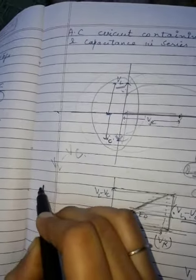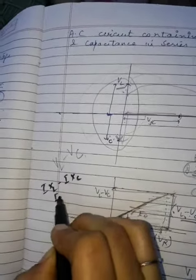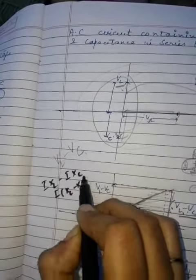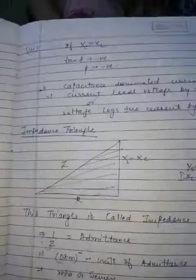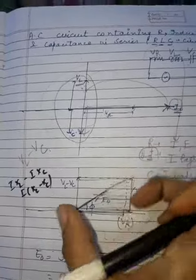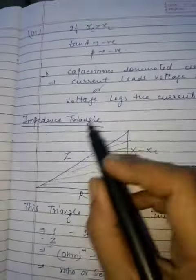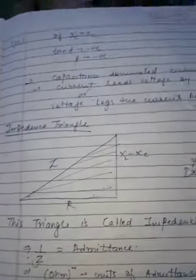Now VL minus VC, where VL equals i XL and VC equals i XC, so it can be written as i times XL minus XC. So this is XL minus XC, and here this is XL minus XC, and this is R. V equals IR. This triangle is known as impedance triangle.